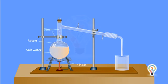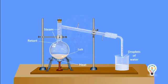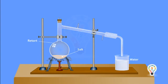We will see the steam getting collected inside the beaker in the form of droplets of water. The steam condenses and reaches the beaker and the salt is left behind in the retort. This method of separation of soluble solids from liquids is called distillation.